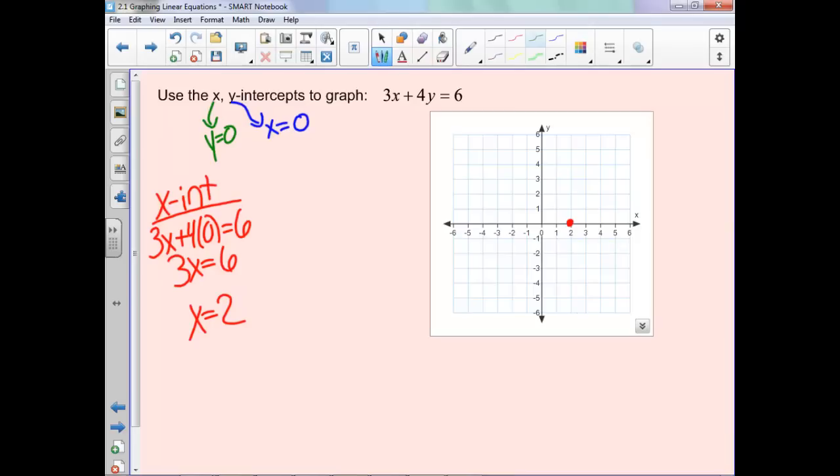Now, for our y-intercept, it's when our x-value is 0. We'll substitute in 0 for x and solve. 3 times 0 is 0, 4y equals 6. Divide them both by 4. So y is 6 fourths, which we can reduce down to 3 over 2, which is the same thing as 1 and 1 half. So on our y-axis, we'll go up 1 and 1 half.